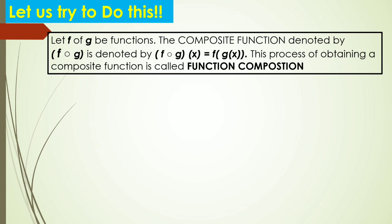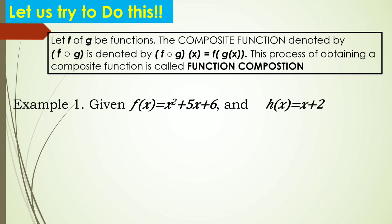Let f and g be functions. The composite function, denoted by f composed of g, is defined by f composed of g of x equals f of g of x. This process is called function composition. Example: given f of x equals x squared plus 5x plus 6 and h of x equals x plus 2, find f composed of h of x.